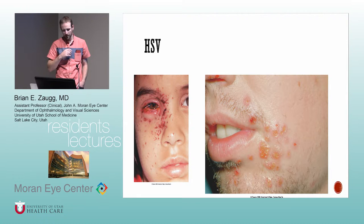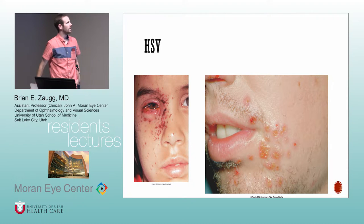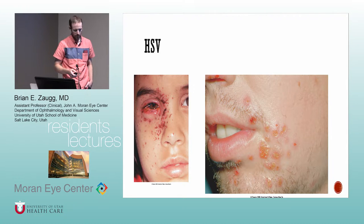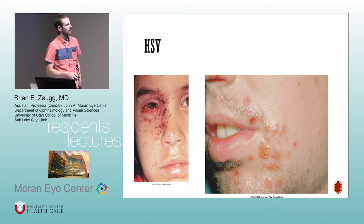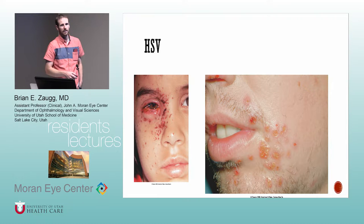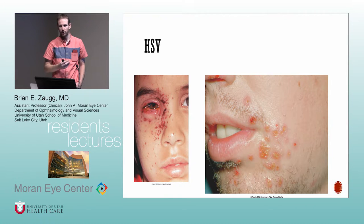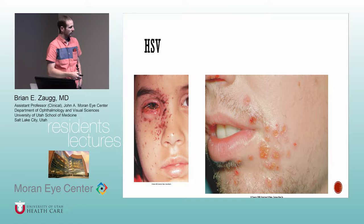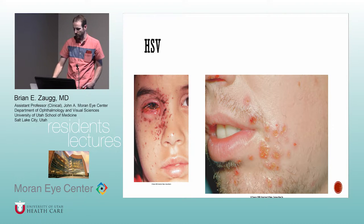This is a typical look for herpes simplex — crusting lesions with conjunctivitis. It's pretty typical to have something going on around the mouth or nose and then the eye is red. Here's another case with clear herpes simplex conjunctivitis and a pretty bad rash around the nose.